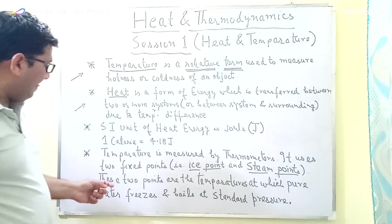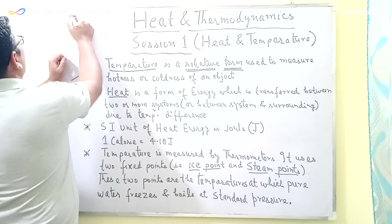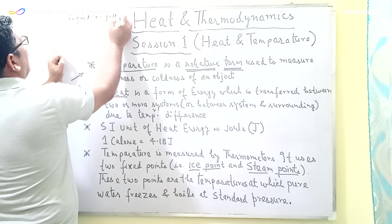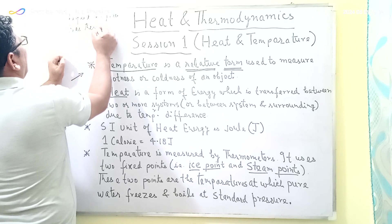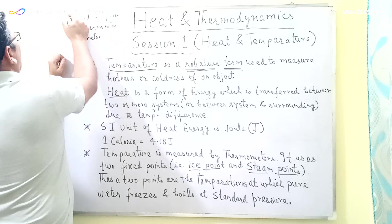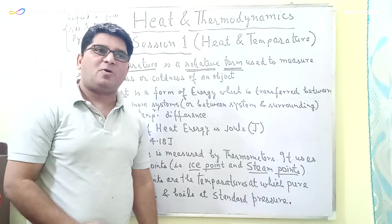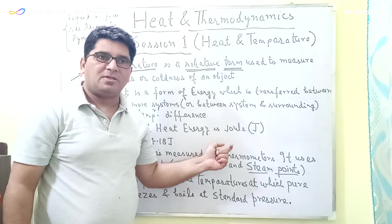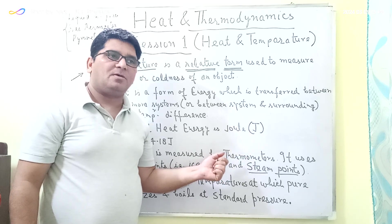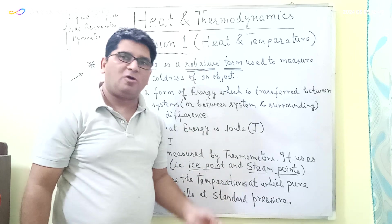The third point is the measurement of temperature. Temperature is measured by thermometers. There are basically three types: the liquid-in-glass thermometer, the gas thermometer, and the pyrometer. Most physical properties of a material change substantially with temperature, and the most commonly used physical property while constructing a thermometer is the change in volume of the liquid with temperature.